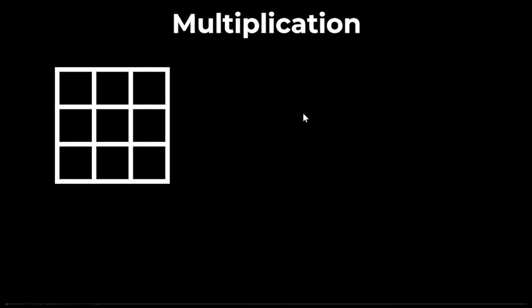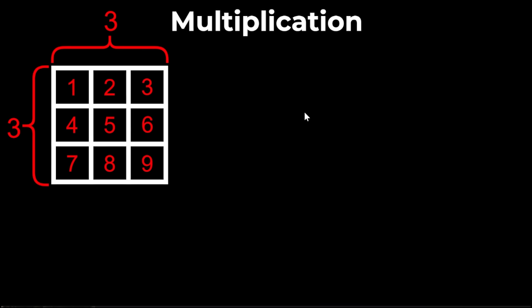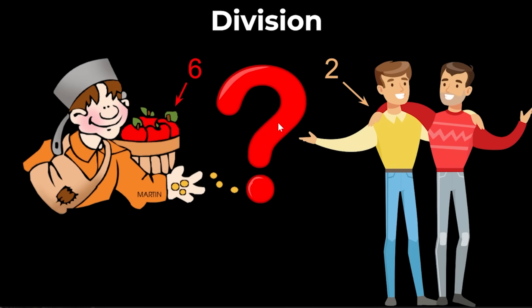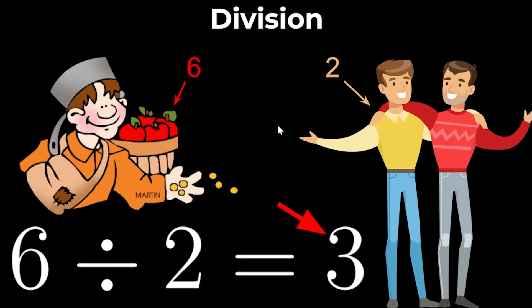Multiplication: If I have a 3 by 3 grid of cells then I have 9 cells because 3 times 3 equals 9. Division: If Johnny has 6 apples and 2 friends how many apples does each friend get? 3 because 6 divided by 2 is 3. But you struggle with division because you have no friends and you can't divide by 0.